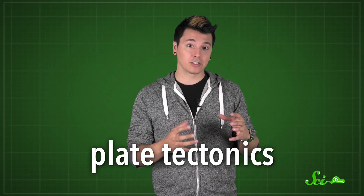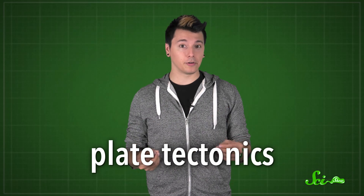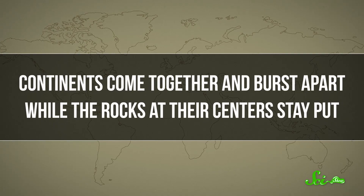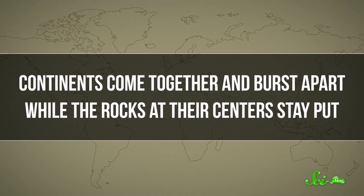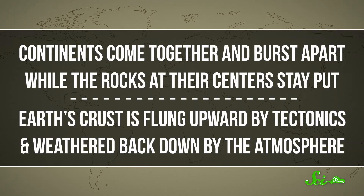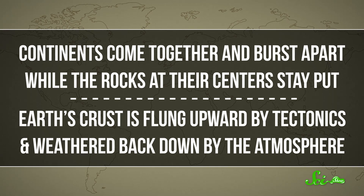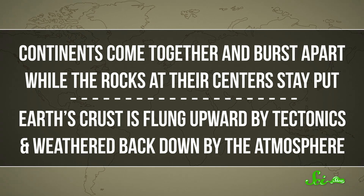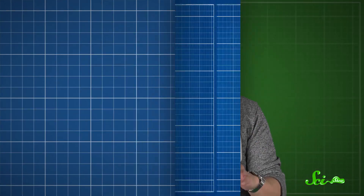Earth has been through a lot in the 4.5 billion years since it formed. Most of Earth's history has been shaped by plate tectonics, where continents slide around. But instead of skirting around each other neatly, the continents can interact in some pretty unexpected ways. Continents come together and burst apart while the rocks at their centers stay put. Earth's crust is flung upward by tectonics and weathered back down by the atmosphere, and that's all led to a lot of changes over the years.